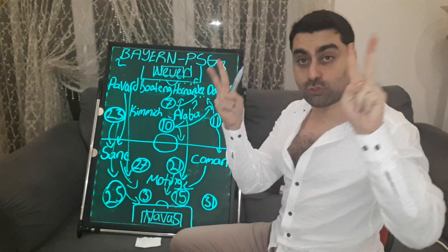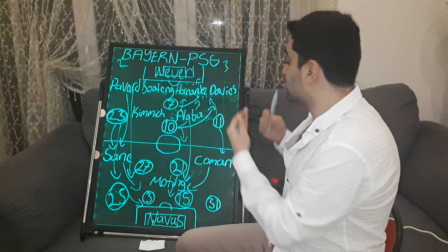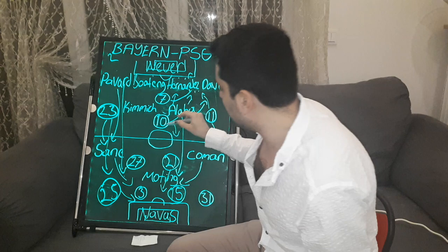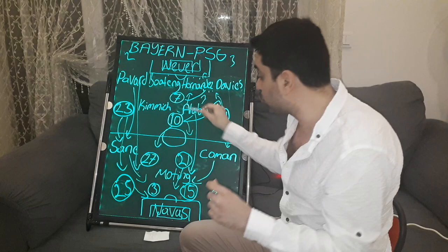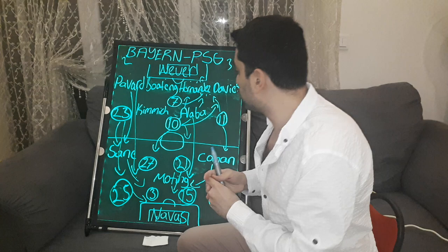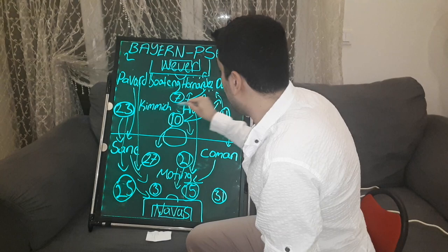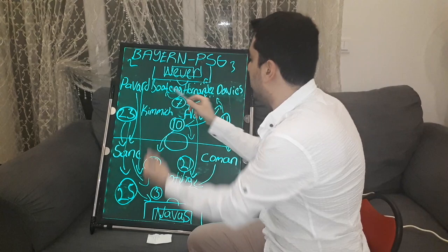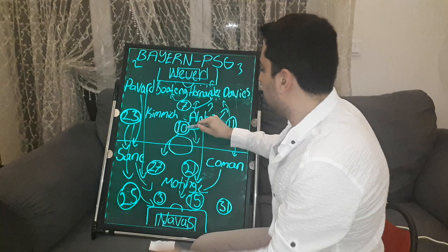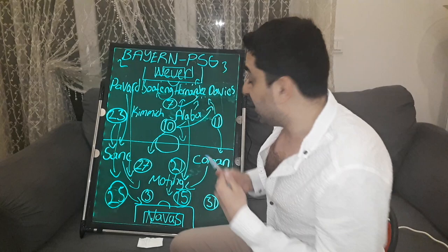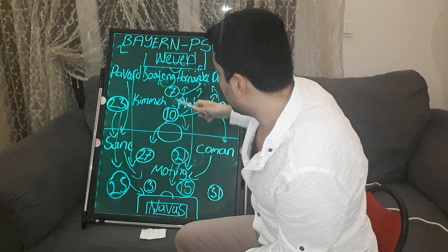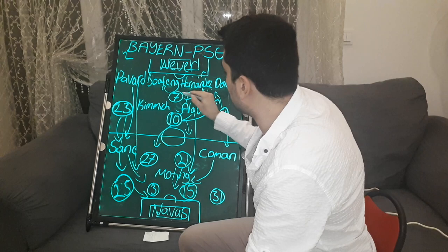In the second half, PSG developed very dangerous counter-attacks with Mbappe and Neymar. Neymar dropped back into midfield to receive the ball and carried it forward quickly. In one attacking move, Mbappe pressed defender Boateng, and Pavard and Boateng both closed in on him inside Bayern's box. Then Di Maria came to the left and made an assist to Mbappe, who scored in front of Boateng to make it 3-2.